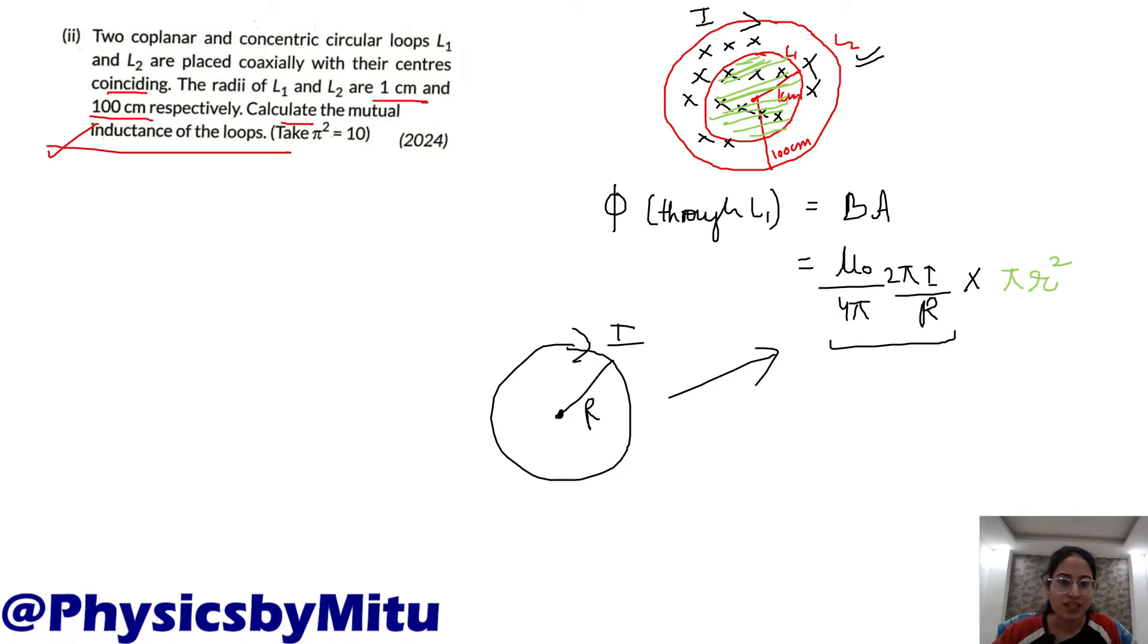I will repeat it. Flux through the smaller loop, the inner loop, is B into A. Which magnetic field do you put? The magnetic field due to L2: μ₀/4π times 2πI/R into area of the loop, area of the inner loop.